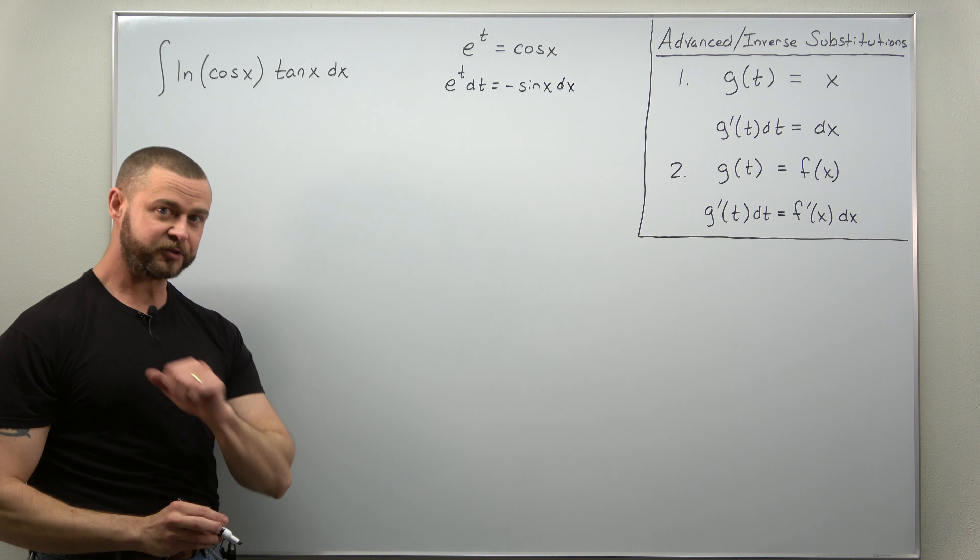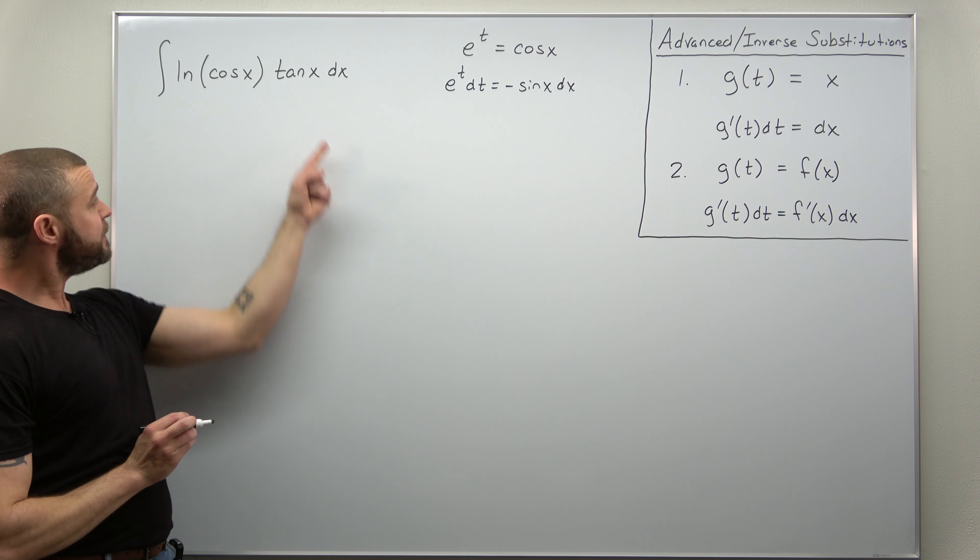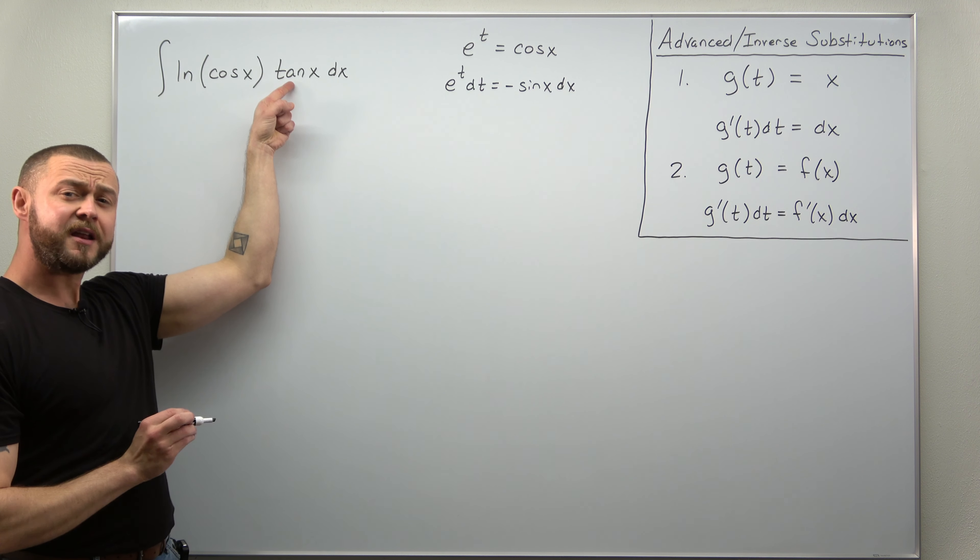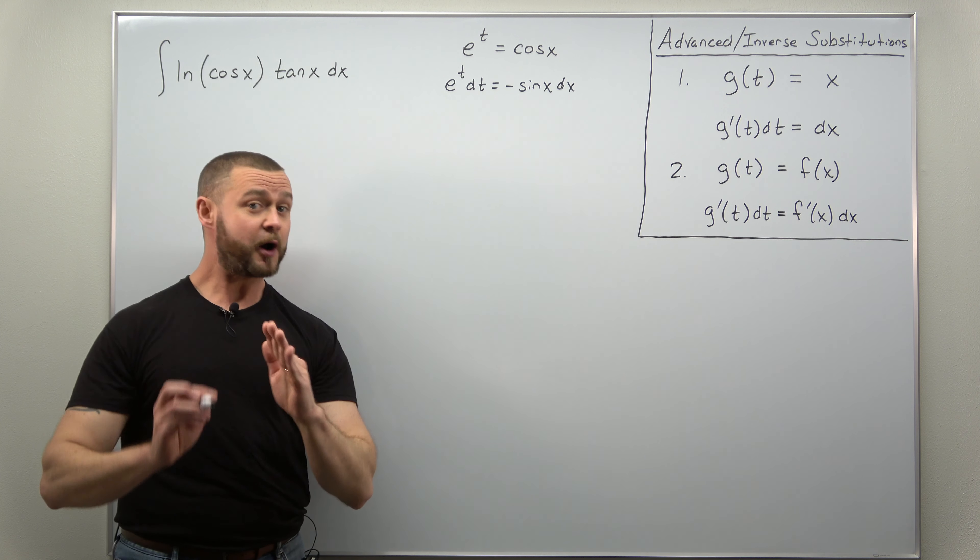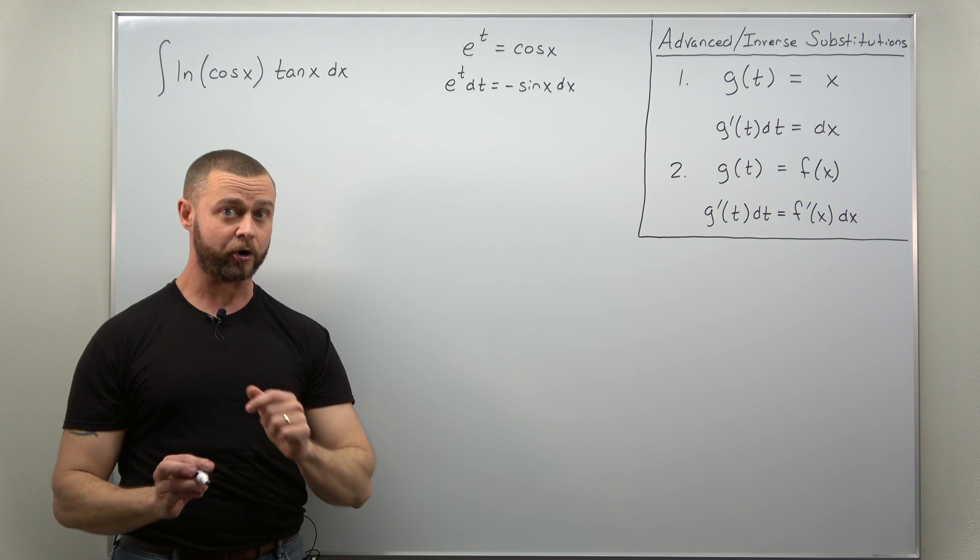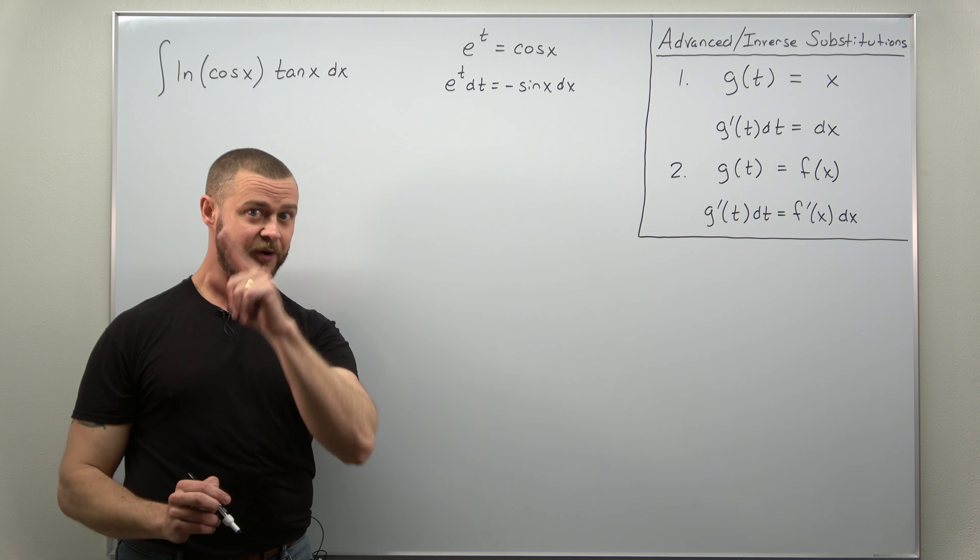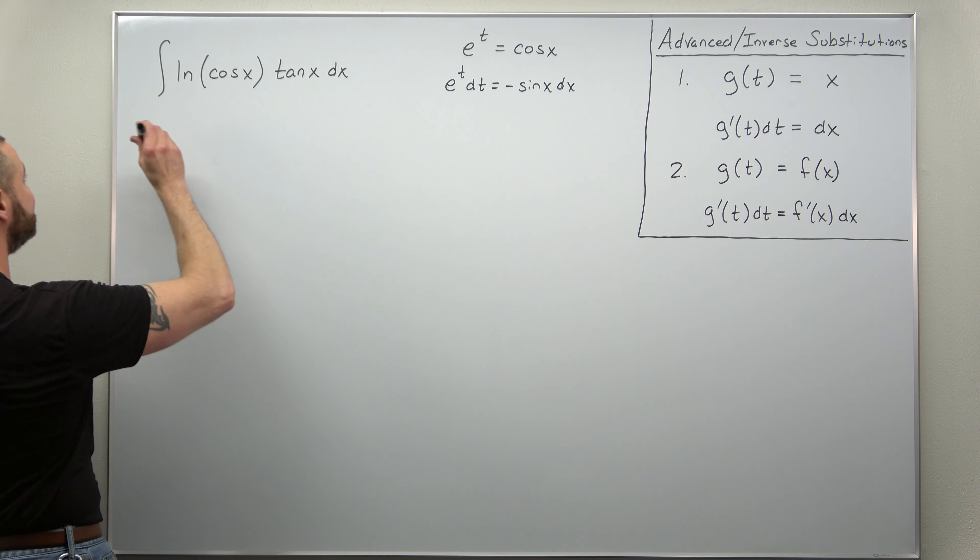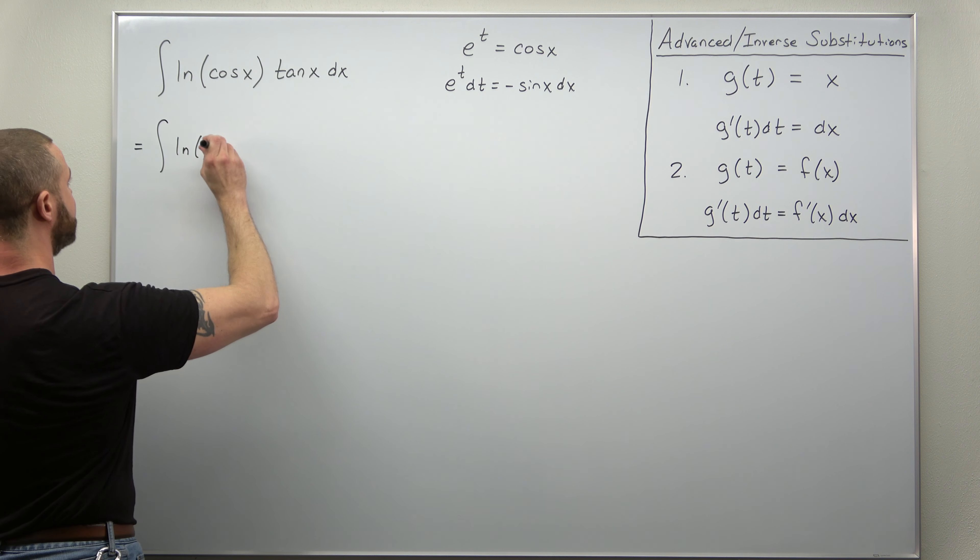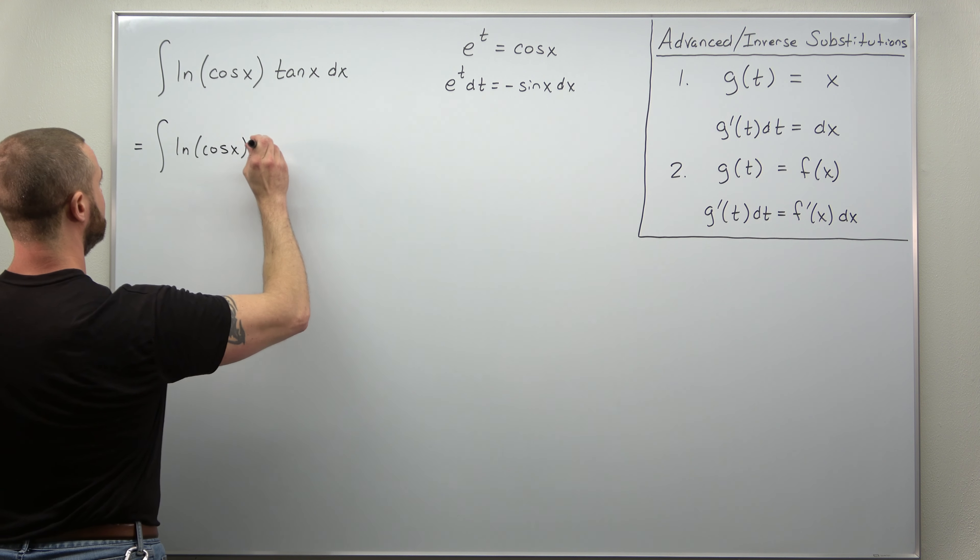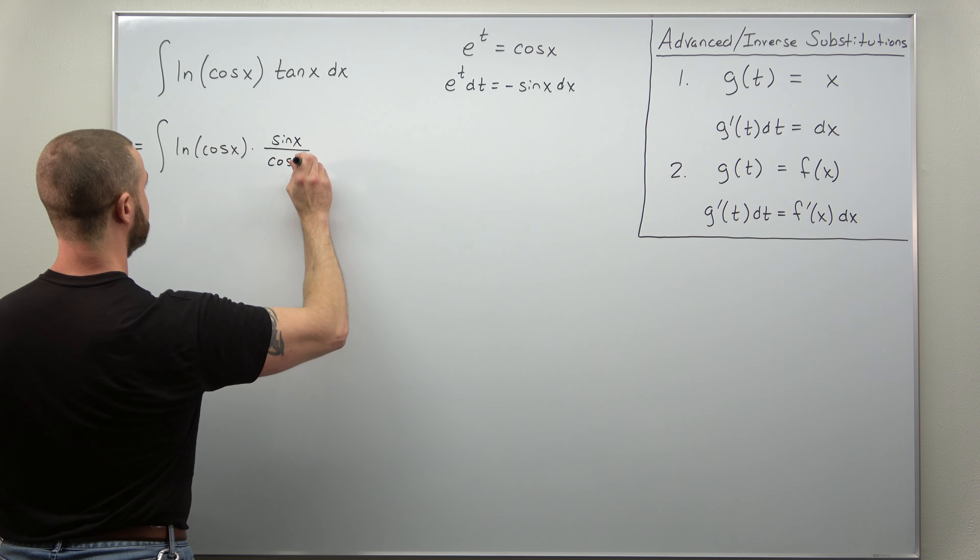All right, now in order to get this substitution to work we would need a factor of sine of x, and we can maybe see that here by rewriting tangent as sine divided by cosine. Don't be afraid to try to rewrite your original integral in addition to using a substitution. So let's first rewrite tangent as sine divided by cosine. We'll keep this as natural log of cosine of x and then times sine of x divided by cosine of x.